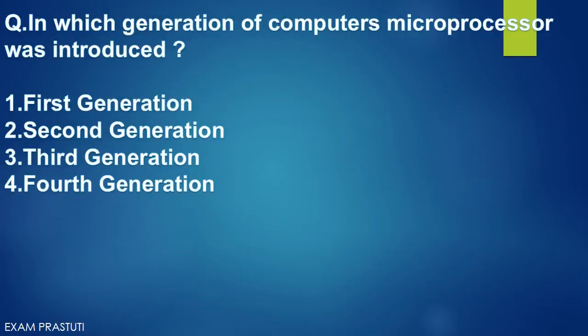In which generation of computers was the microprocessor introduced? Option number 4 — Fourth Generation. The microprocessor was first used in fourth generation computers.